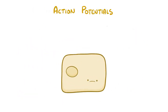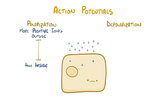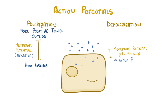Action potentials are initiated by depolarization, which is the opposite of polarization. Polarization is when there are more positive ions outside the cell than inside. This difference in charge is called the membrane potential, and is negative since there are more positive ions outside the cell. So depolarization is when the membrane potential gets smaller, making a cell slightly more positive than it would normally be — imagine a negative, gloomy cell experiencing a brief moment of joy.